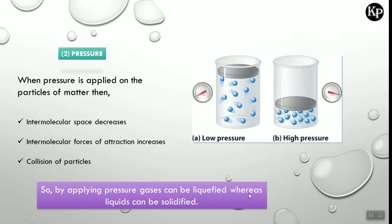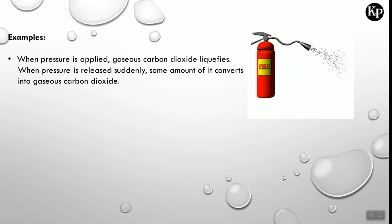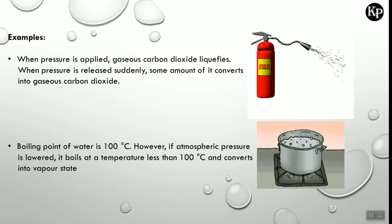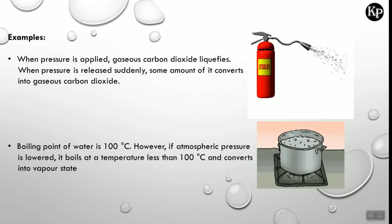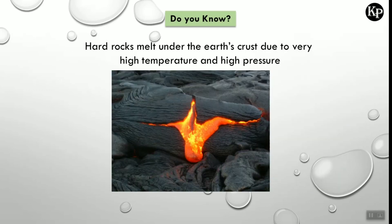By applying pressure, gases can be liquefied whereas liquids can be solidified. For example, when pressure is applied, gaseous carbon dioxide liquefies; when pressure is released suddenly, some of it converts back to gaseous carbon dioxide. The boiling point of water is 100°C; however, if atmospheric pressure is lowered, it boils at a temperature less than 100°C and converts into the vapor state. Hard rocks melt under the Earth's crust due to very high temperature and high pressure.